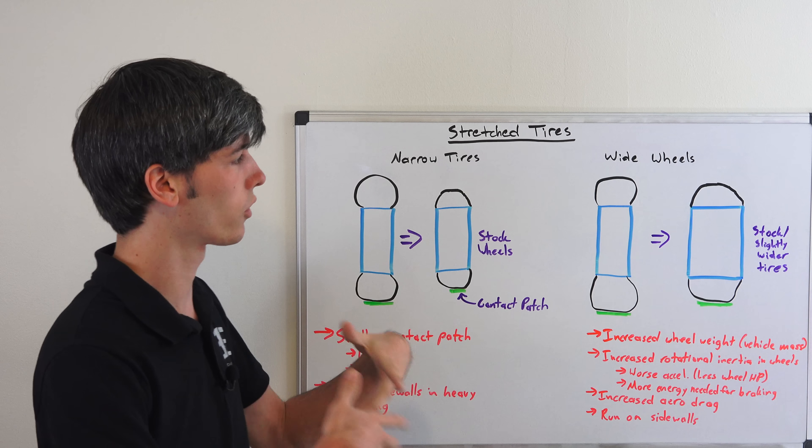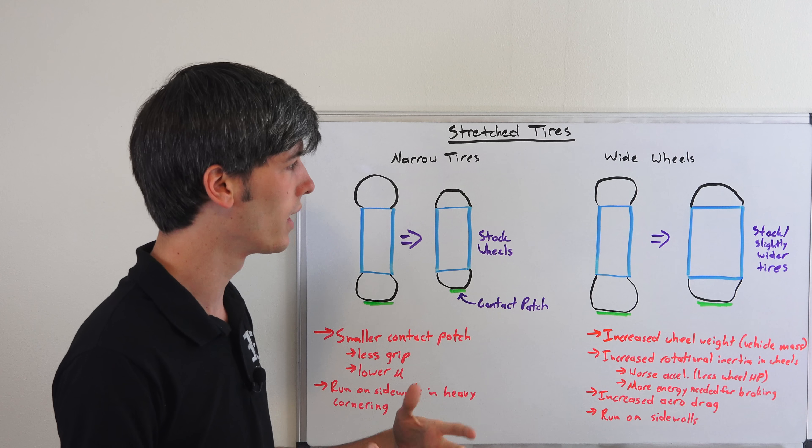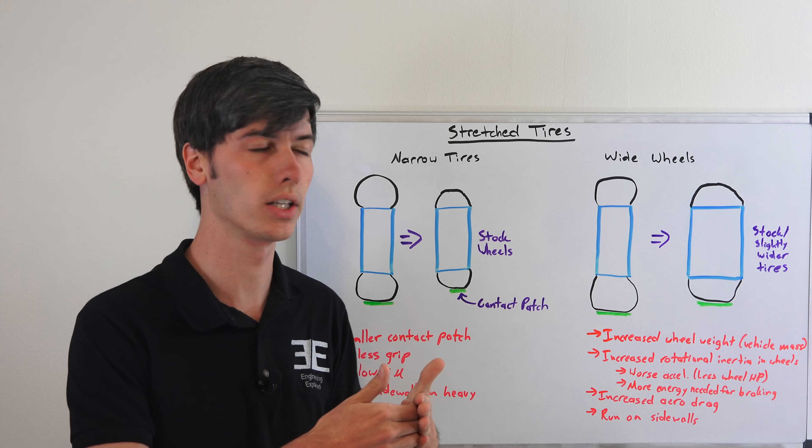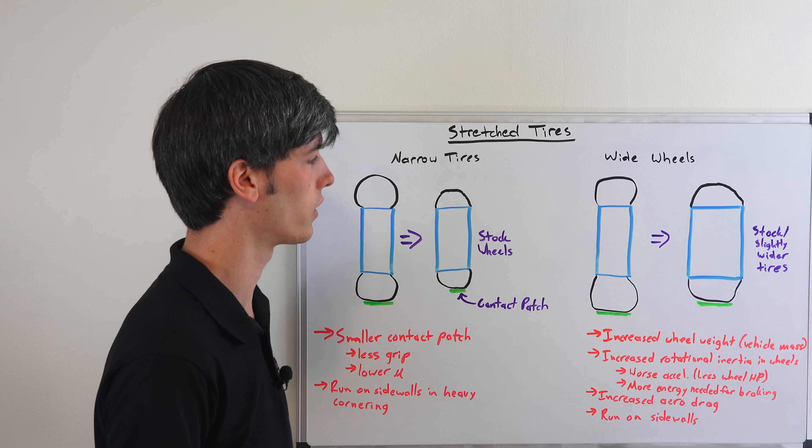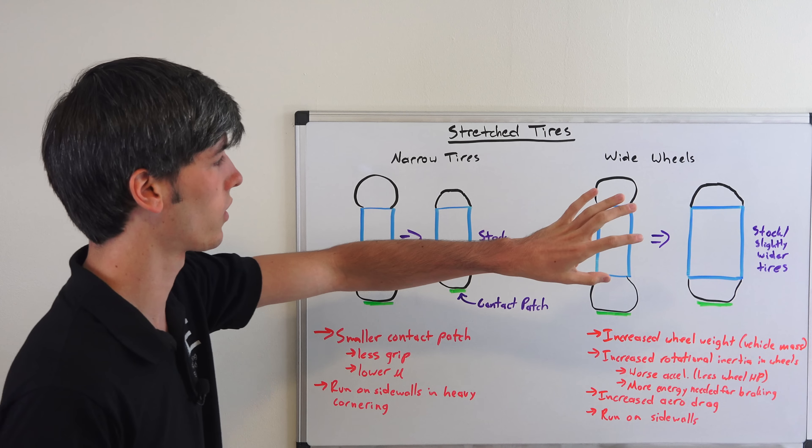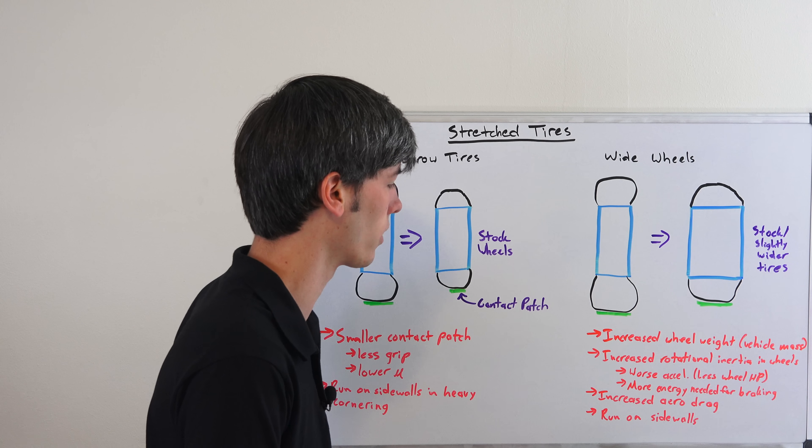And you also are going to need more energy to stop your vehicle, so because there's more energy in that spinning wheel at speed, it takes more energy. That means you're putting more energy into your brakes. You could have brake fade earlier, and it's not going to be a huge difference, but it is a difference, it's a performance difference. So if you get a significantly heavier wheel, it could make a big difference.